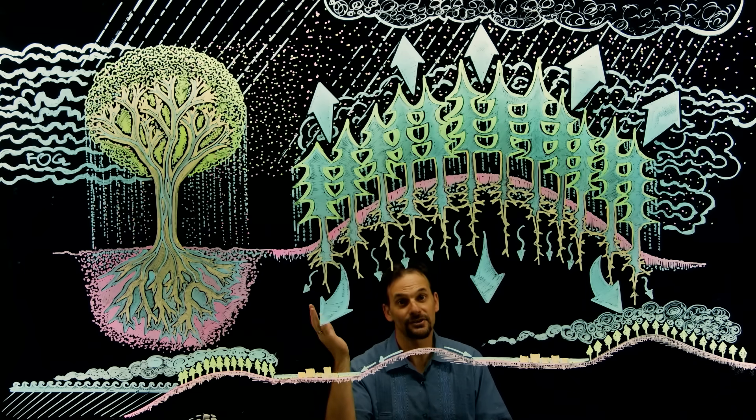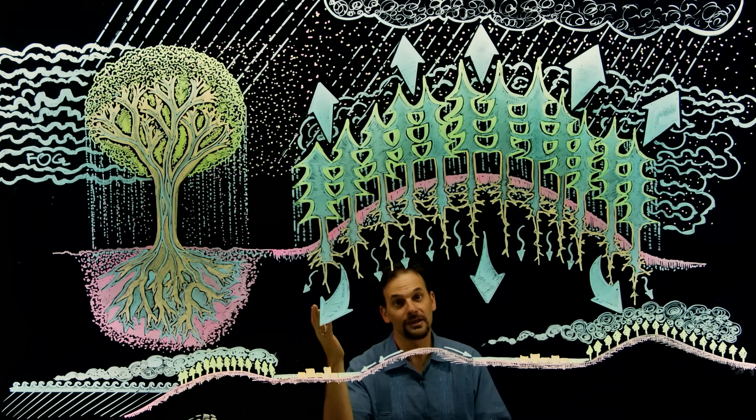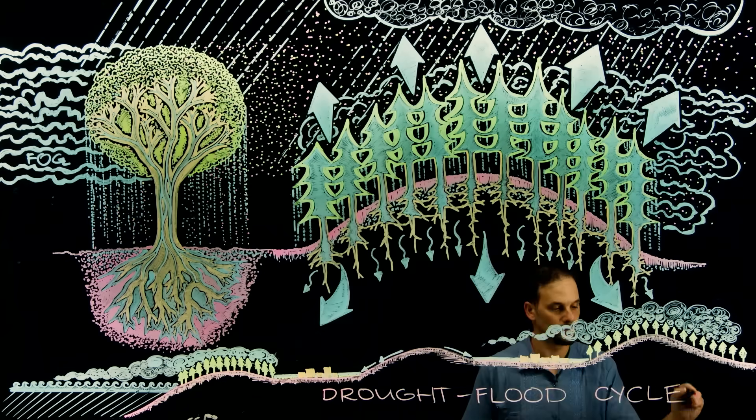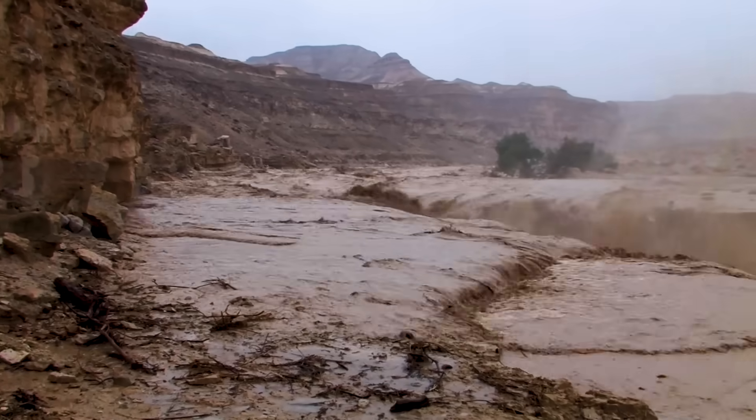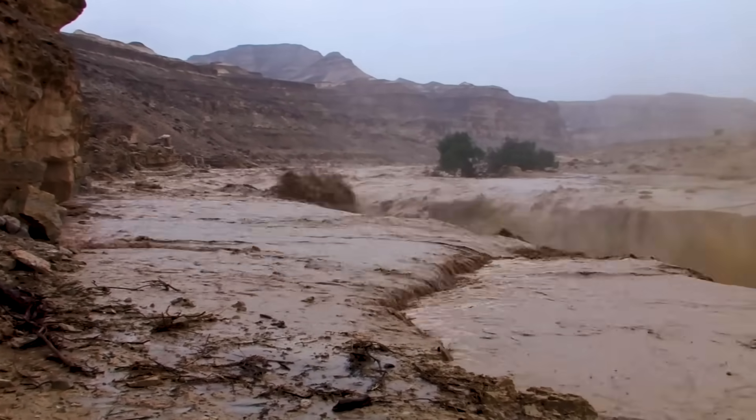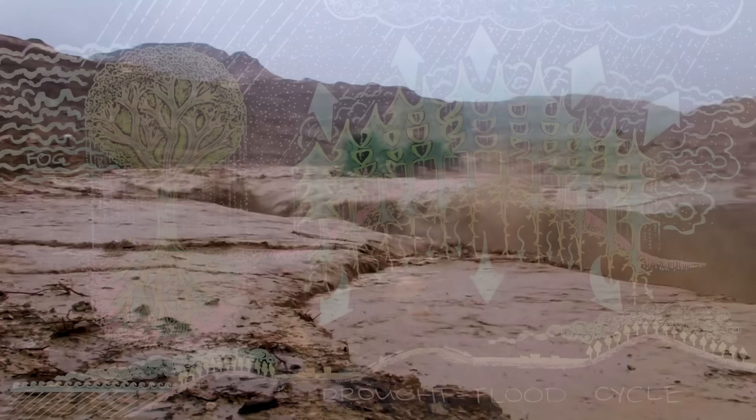So, my friends, this sorry state of affairs is what we call the drought-flood cycle. And this is where much of the world is today. Long droughts punctuated by short, intense floods. And shortly after the floods are over, the droughts start again.